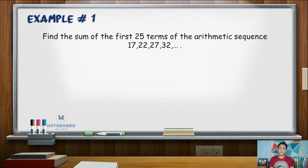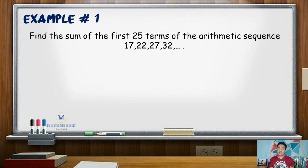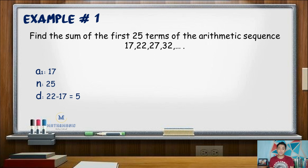As an example, find the sum of the first 25 terms of the arithmetic sequence 17, 22, 27, 32, and so on. To use the formula, we first need to know the first term, which is already given as 17. N, or the number of terms, is 25. For the common difference, we subtract succeeding terms by the preceding term: 22 minus 17 gives us a common difference of positive 5.